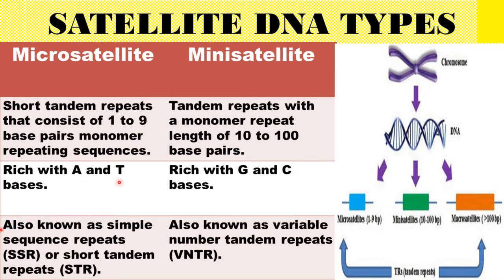Microsatellite is rich in adenine and thymine base pairs, whereas minisatellite is rich in guanine and cytosine. Microsatellite is also known as Simple Sequence Repeat — that is why we call it SSR. It can also be called Short Tandem Repeat, STR. So microsatellite can be called SSR or STR, whereas minisatellite is known as Variable Number Tandem Repeats, VNTR.